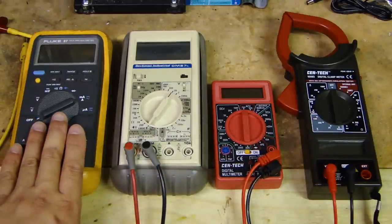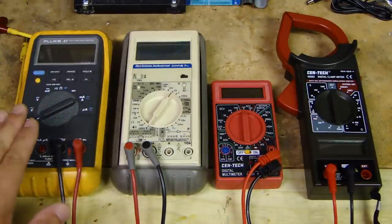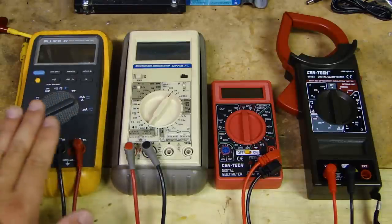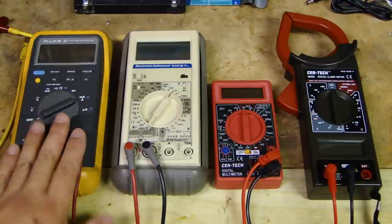As you see here on the left side, the Fluke 87. This one I got 14, 15 years ago. And I think back then it retailed for over $400. This is a very good meter. And Fluke has been around for a long time making test equipment.